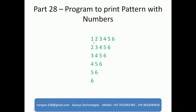In the first row I need to print 6 values: 1, 2, 3, 4, 5, 6. In the second row I need to print 2, 3, 4, 5, 6. And in the third row I need to print 3, 4, 5, 6, and so on. This is the continuation for part 27.